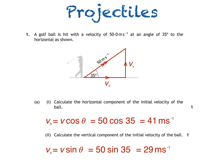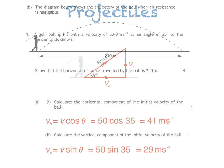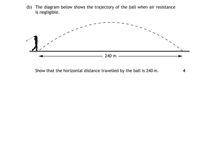Part B says the diagram shows the trajectory of the ball when air resistance is negligible. And we are asked to show that the horizontal distance travelled by the ball is 240 meters.